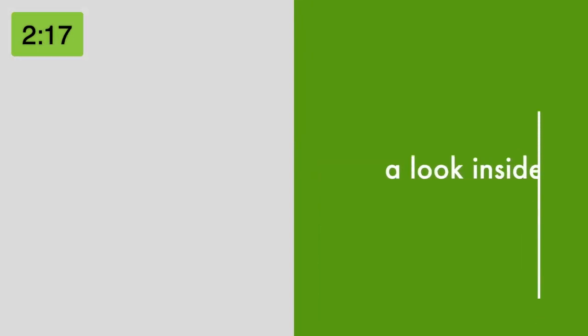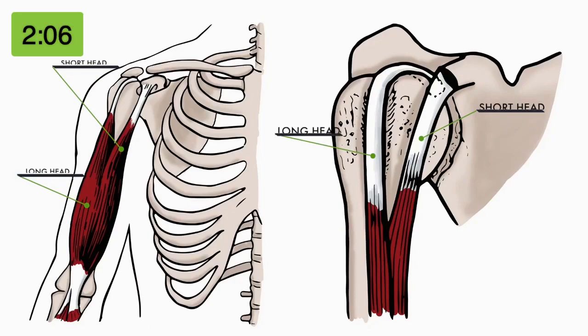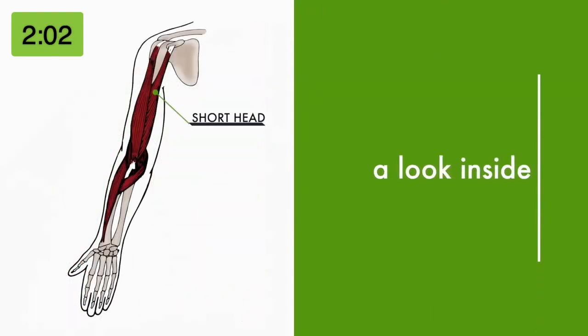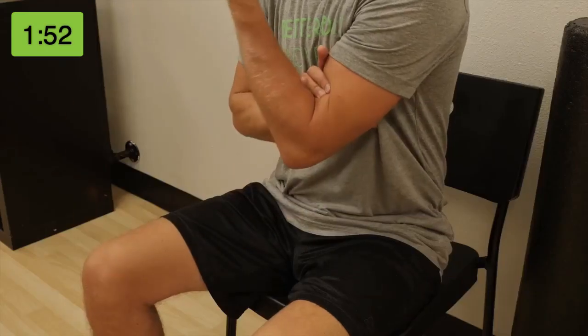The bicep is named that because there are two different attachment points near the shoulder. The short head attaches to the coracoid process, which is part of the shoulder blade. The long head goes over the humerus through the biceps channel and connects in the socket. Pain will be present inside your arm if there's a problem with the short head; if there's a problem with the long head, the pain will typically run over the shoulder. We're going to locate the head of the biceps that attaches near the forearm.